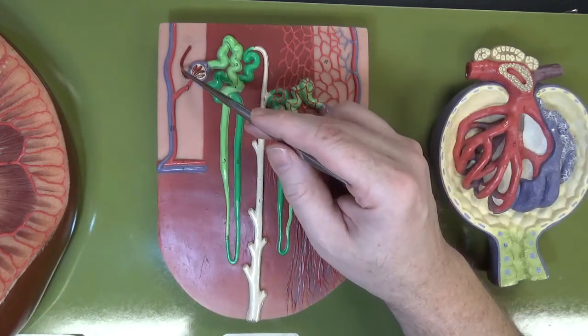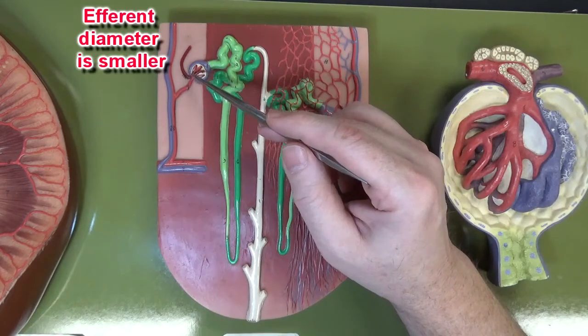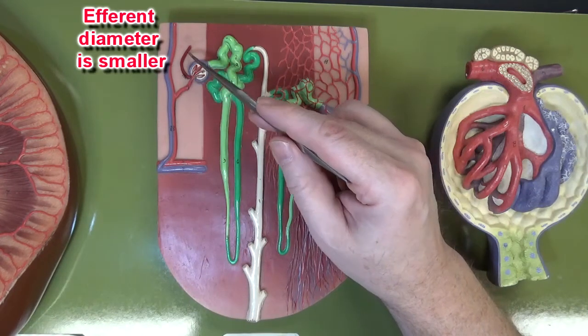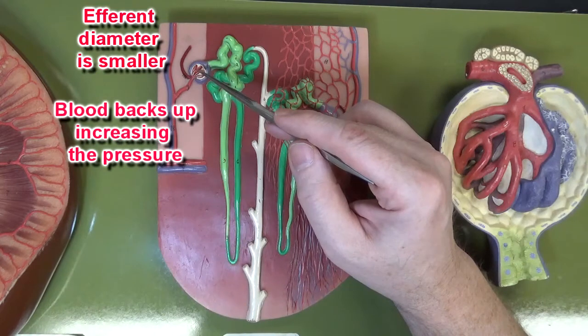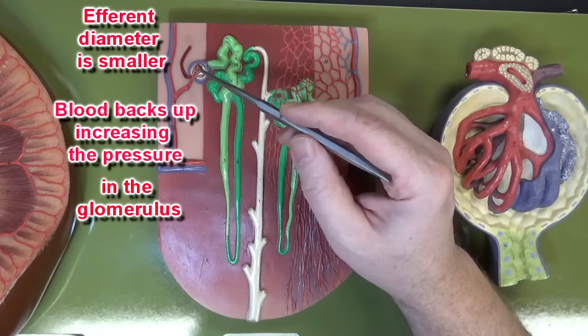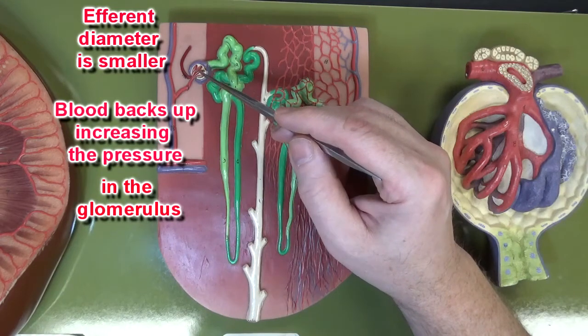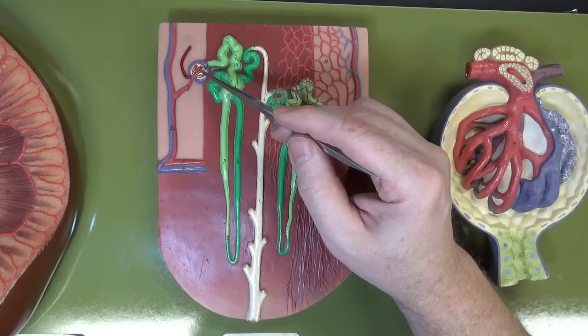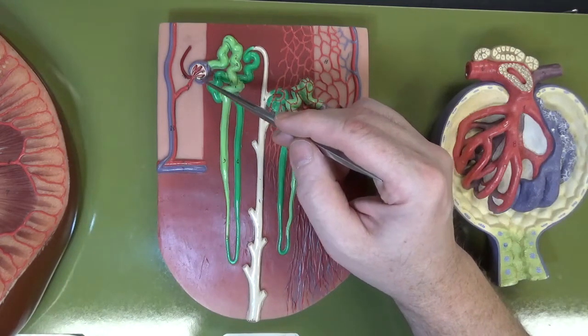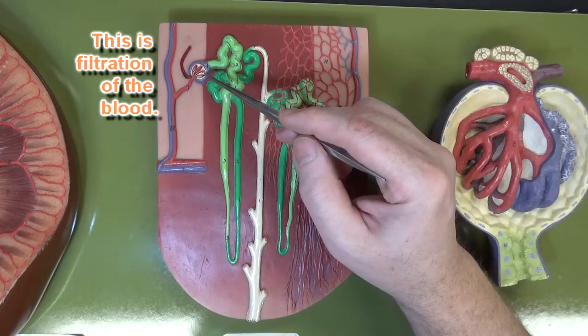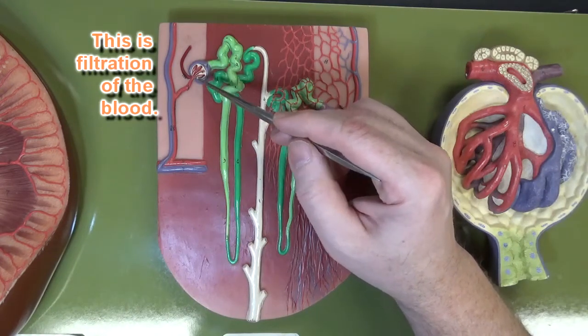What's going to happen is this efferent arteriole is going to be smaller than the afferent arteriole, which is going to cause blood to back up inside this glomerulus. Now that higher pressure in here is going to force the fluid portion of the blood out of the capillaries and into this glomerular capsule. So filtration happens here.